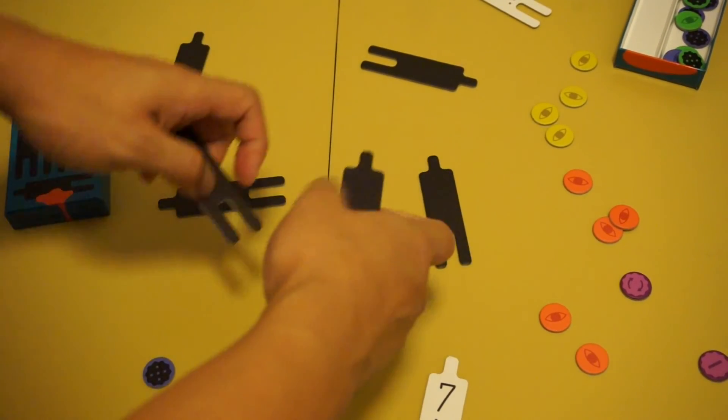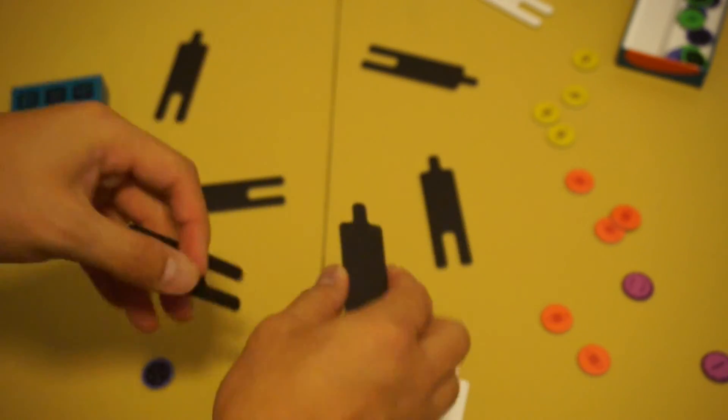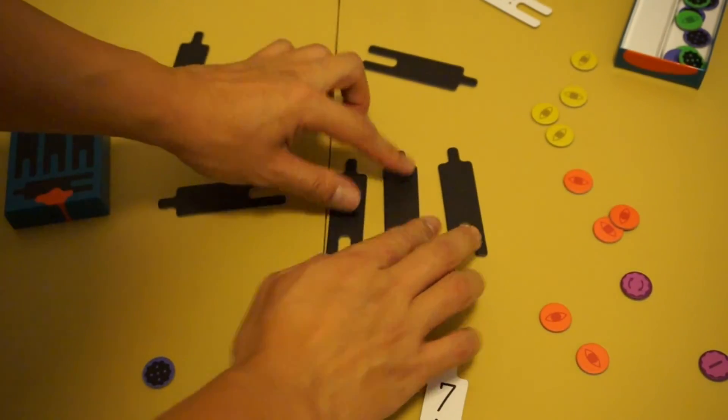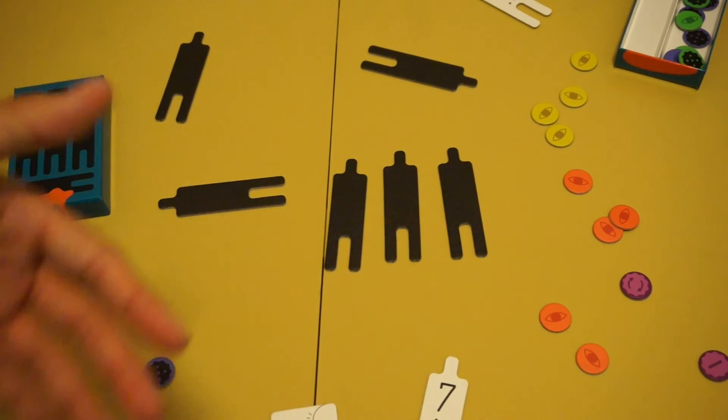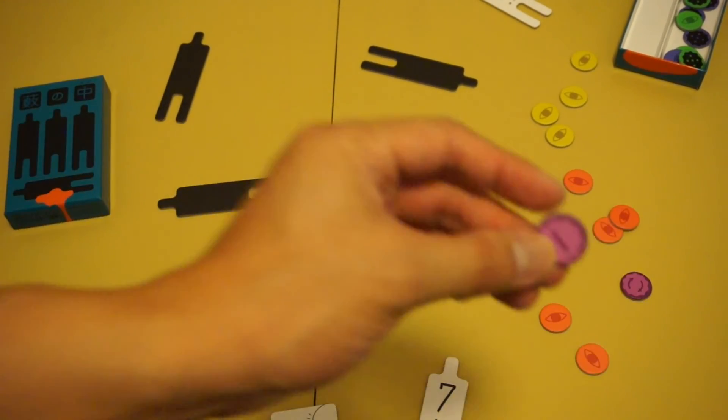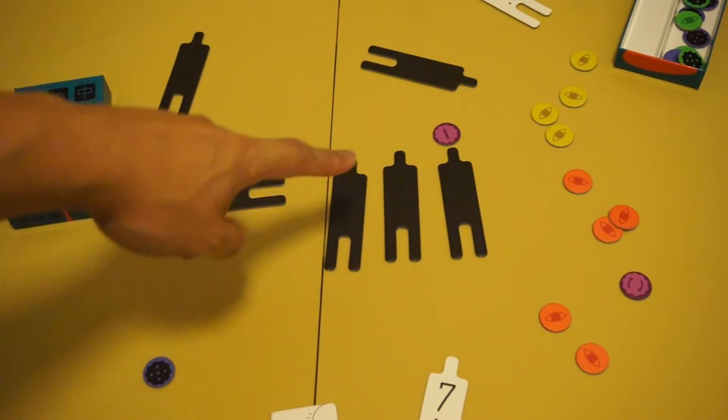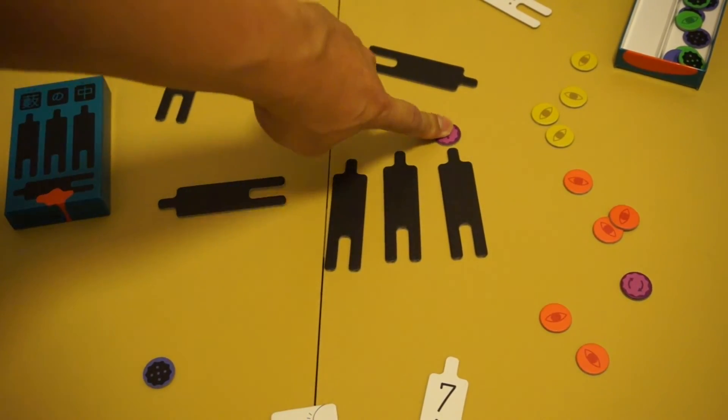The sub player will then take both of them, take a look at them, take a look at the numbers and then put them back in the same order that he took them from. You should not switch the order that they're in. Take one of these purple ones, place it on the suspect you did not see. So this will indicate to everyone that this is a suspect you did not see.